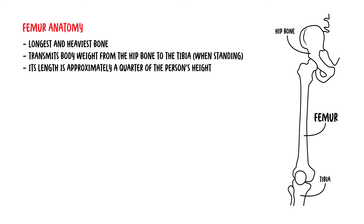The femur consists of the shaft, which is the body, and the two ends — the proximal and distal ends of the femur.